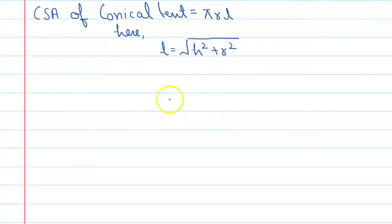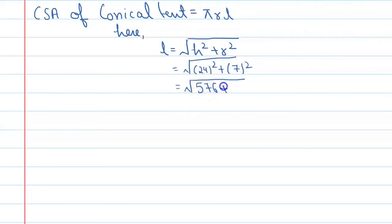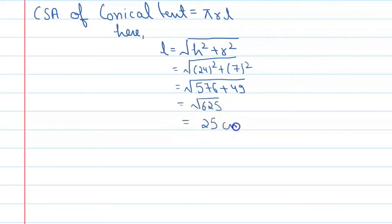So l equals the square root of h squared plus r squared. The value of h is 24, so 24 squared, and r is 7, so 7 squared. That gives us the square root of 576 plus 49, which is the square root of 625. Since 625 is a perfect square, we get l = 25 meters.